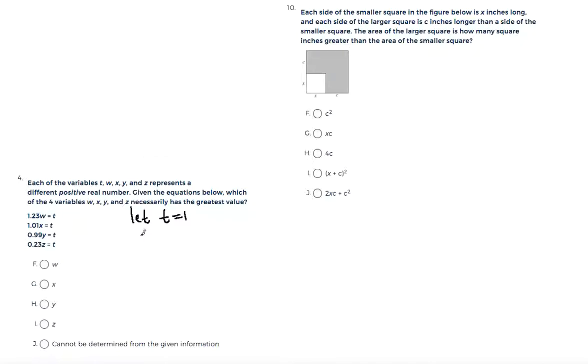So if you solve for w using that, you will get w equals 1 over 1.23. We're not using t anymore because we substituted the t for 1. So x will be equal to 1 over 1.01. y is equal to 1 over 0.99, and finally z is equal to 1 over 0.23.